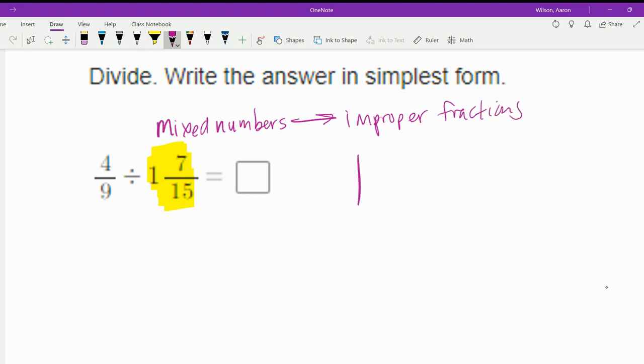So we're going to take 1 and 7 fifteenths and do exactly that. We're going to change it into its improper fraction. So we do 15 times 1. That would be whole number times denominator. So 1 times 15 is 15. And then we add the numerator, which is 7. So that becomes 22 fifteenths.